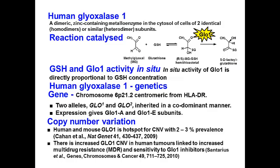The in-situ activity of glyoxalase 1 is directly related to the concentration of glutathione. So in oxidative stress, if glutathione is decreased, then the metabolism of methylglyoxal is decreased, methylglyoxal increases, and there will be consequently increased protein and DNA damage.